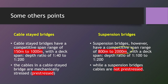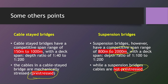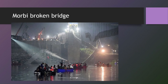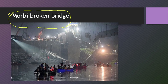Secondly, in the case of cable-stayed bridges, the cables are mechanically pre-stressed. But in suspension bridges, cables do not need to be pre-stressed. As seen in recent news, in the Morbi bridge collapse in Gujarat, the suspender cables got corroded and failed due to excessive weight on the deck.